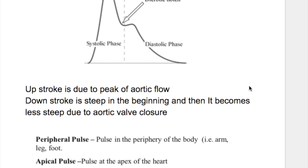So what is a normal pulse? A normal pulse has an upstroke and a downstroke. The upstroke is due to the peak aortic flow. The downstroke is steep at the beginning, then there is a notch known as the dicrotic notch, followed by the start of the diastolic phase, which is less steep due to aortic valve closure.